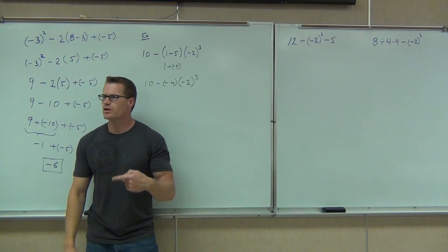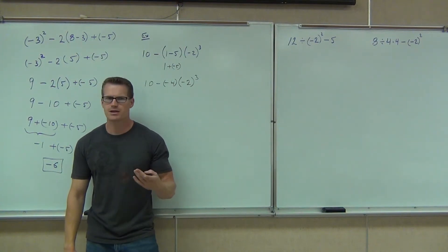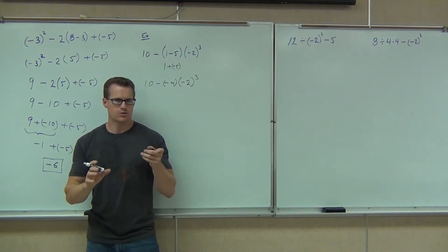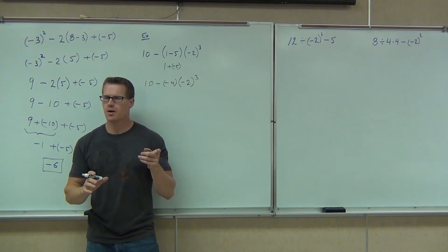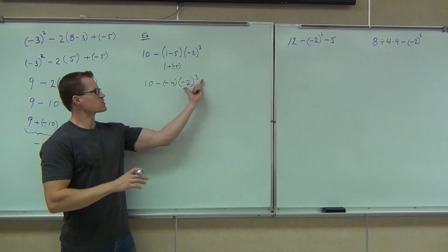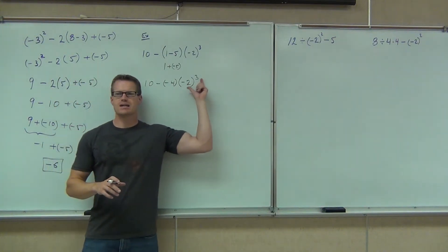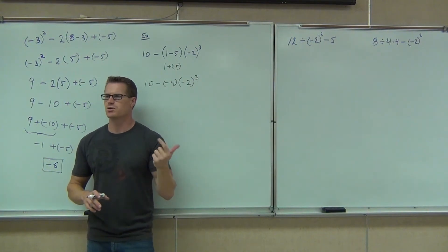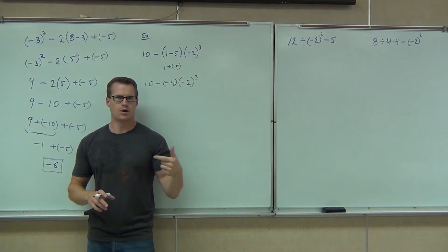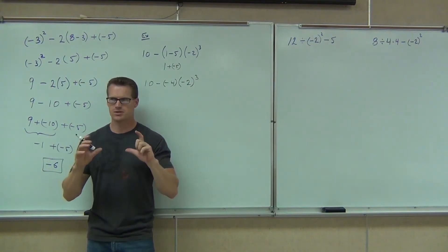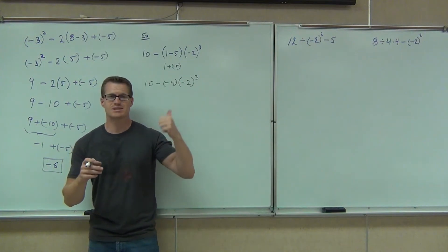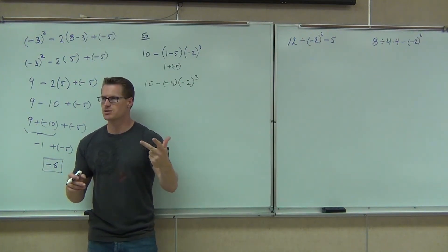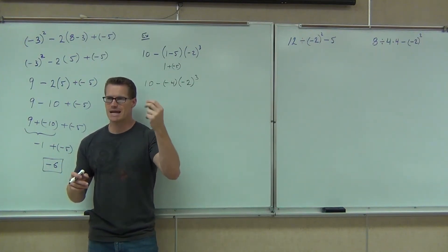Next thing we're going to do — we don't have any more parentheses, it has more than single numbers in there — so we do our exponents. I'm thinking about just this little part right here: negative 2 to the third power. Does the negative go with the 2 or not? Yes, you're starting to see that. It's in the parentheses with it. So what this means is negative 2 times negative 2 times negative 2, which is going to be negative 8.